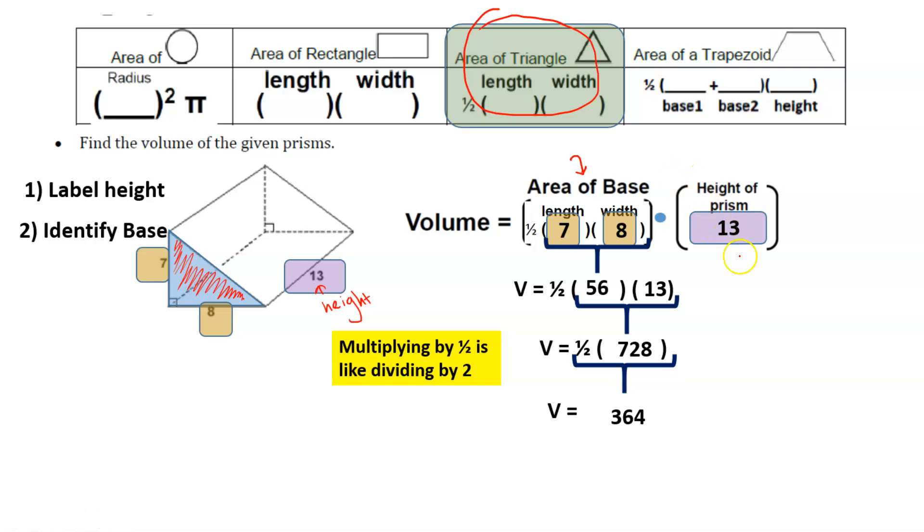I also had one student say, you know what, I did notice I could have written this as volume equals, instead of a half, 0.5 times 7 times 8 times 13. That way, when I put this in my calculator, rather than going step by step, I can just go straight to my final answer, and that is also an option that you can use as well.